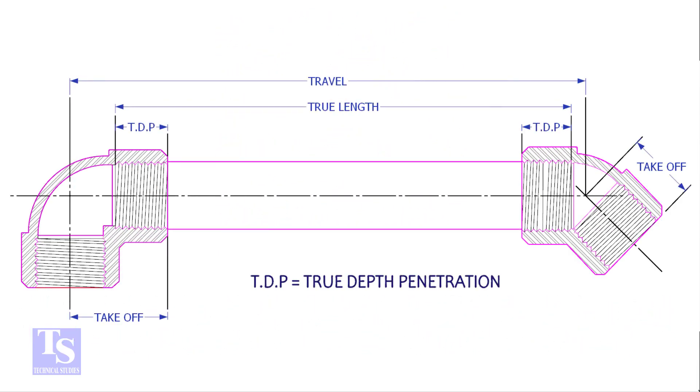To calculate the true length of a threaded pipe, we need to know four things: the travel length, the takeoff length, the TDP (the true depth penetration), and the pressure temperature rating.